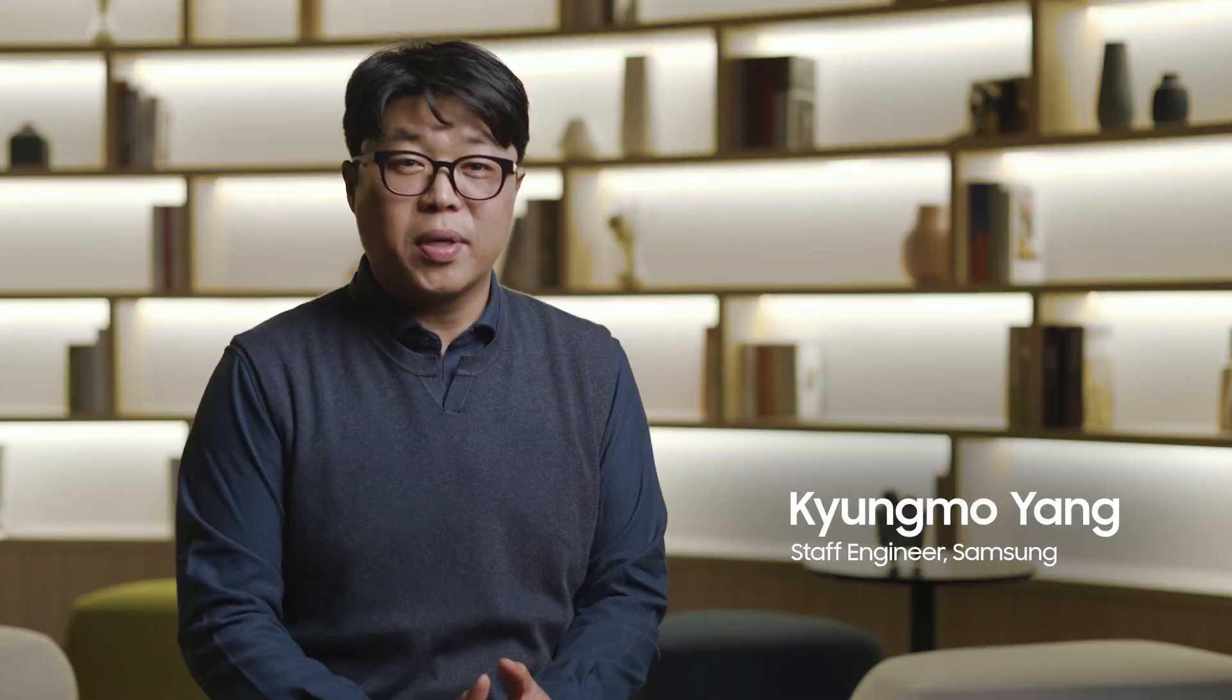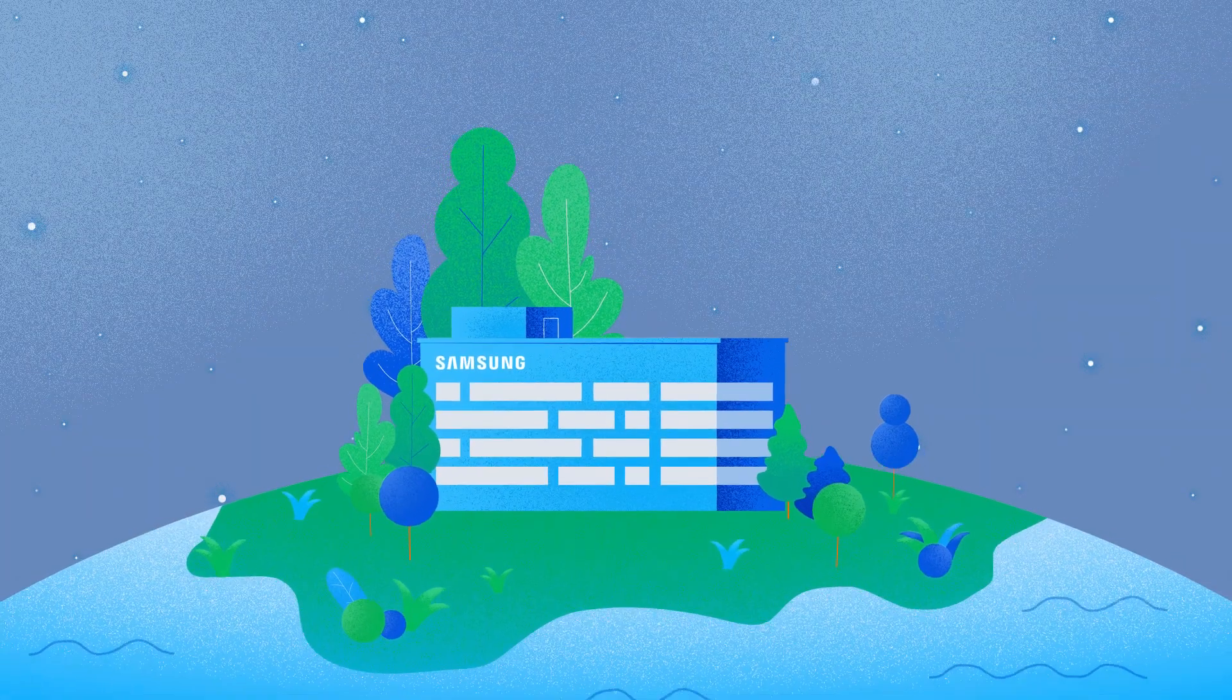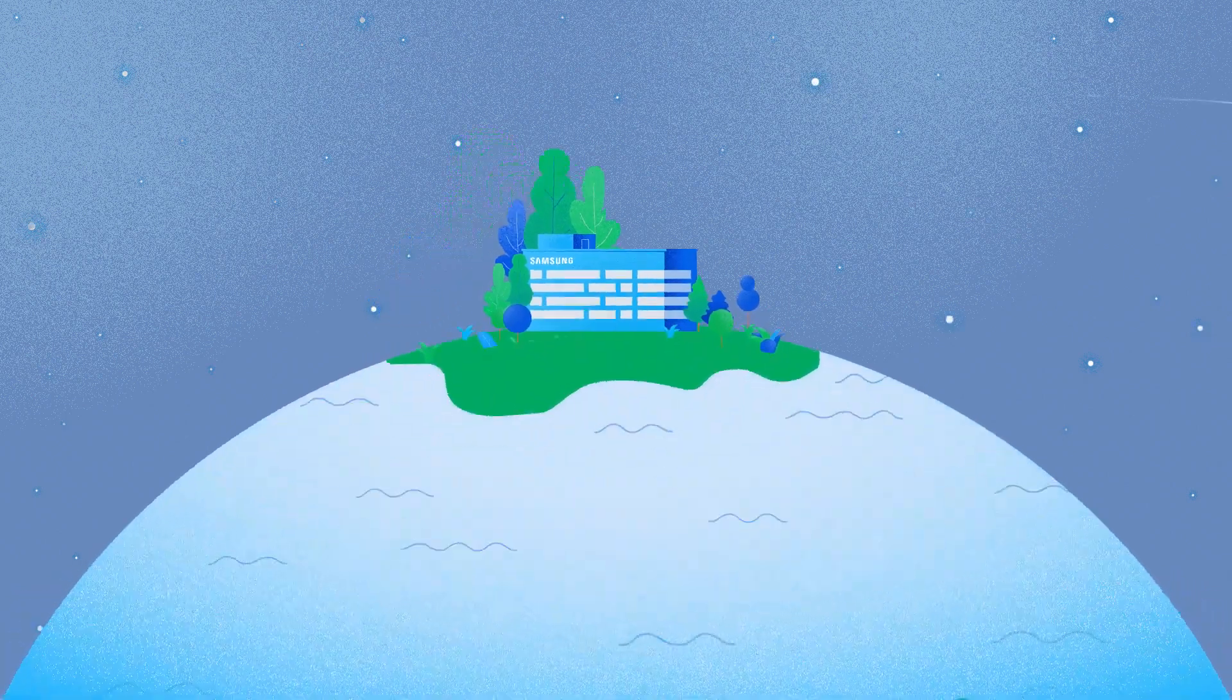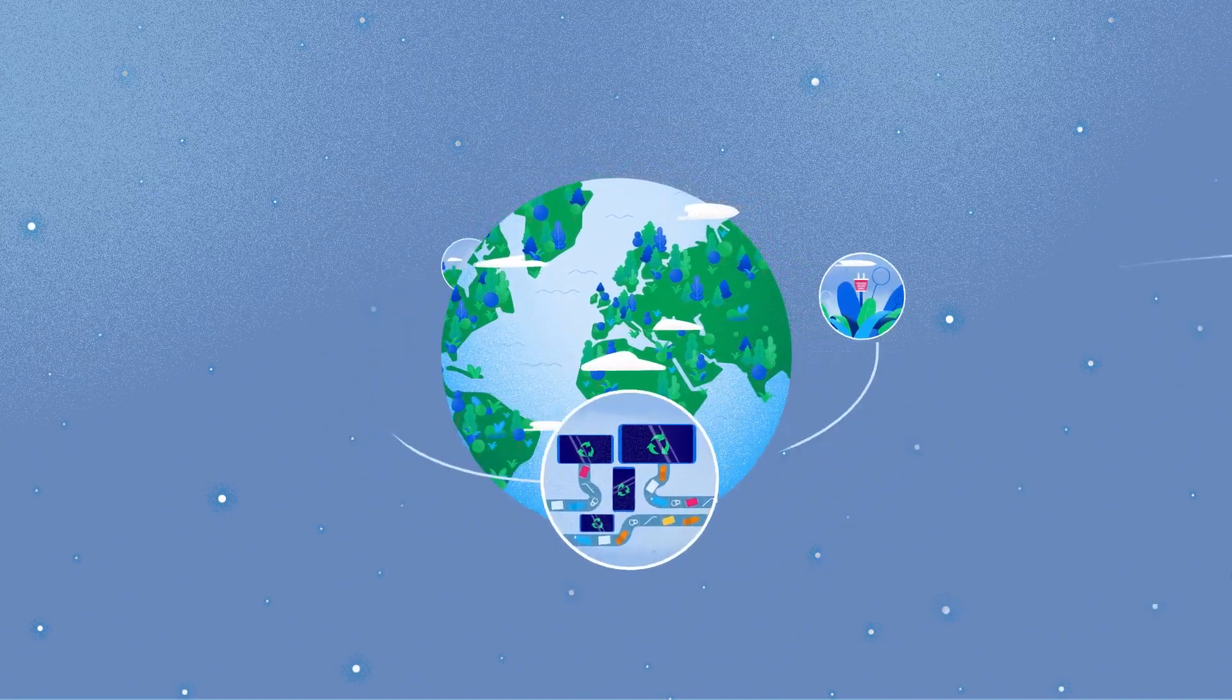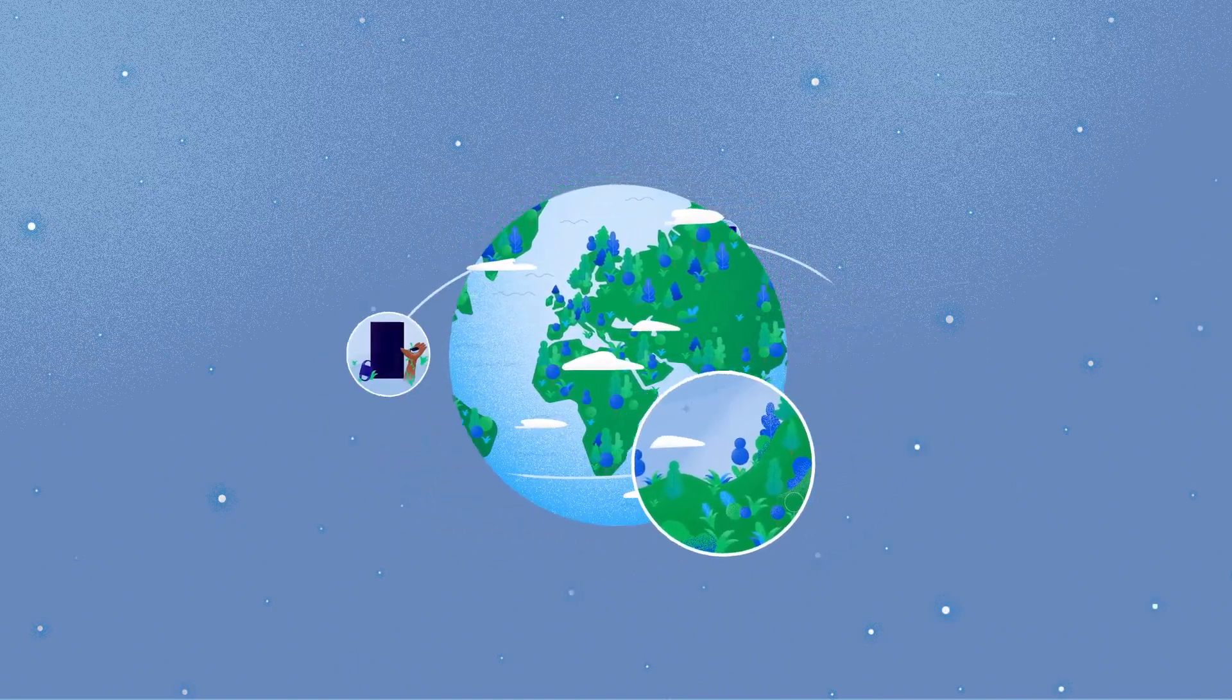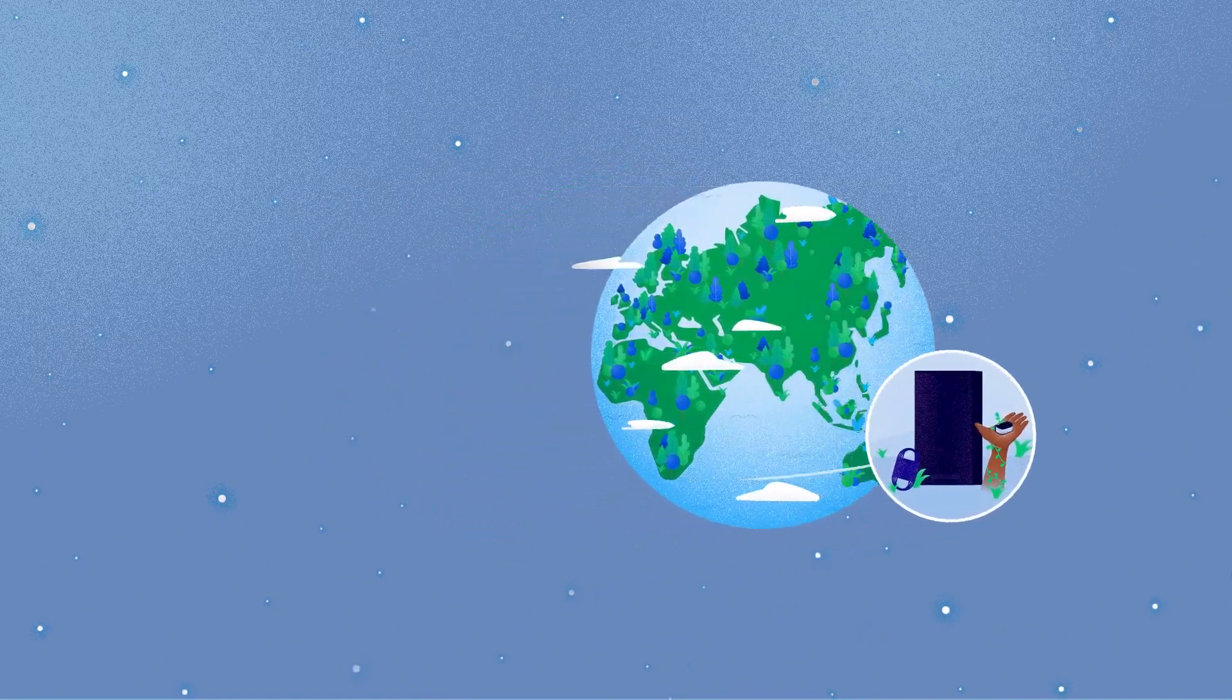Samsung Electronics mobile communications business announced Galaxy for the Planet, a vision for a better planet focused on reducing our environmental impact in the entire process from production to disposal by 2025. Galaxy for the Planet has four goals.